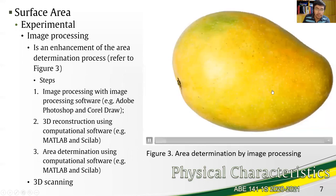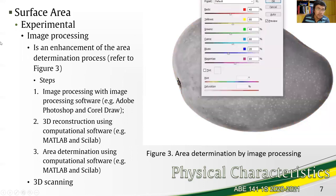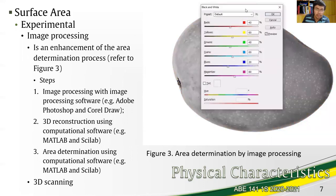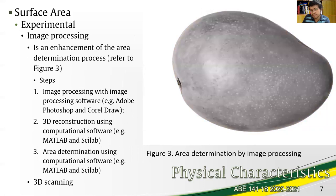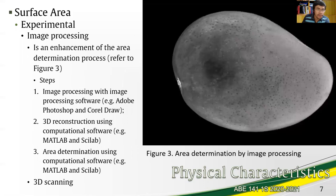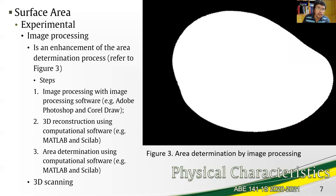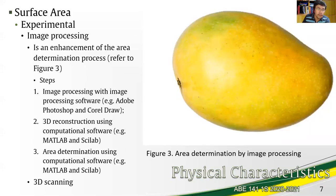Lastly, computational software can be used, as seen here on screen with a sample of area determination by image processing. In surface area determination, this is an enhancement of the area determination process for projected areas. The first step uses image processing software such as Adobe Photoshop and CorelDRAW, followed by 3D reconstruction using computational software such as MATLAB and Scilab, and finally area determination using those same computational tools.